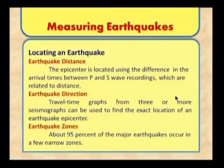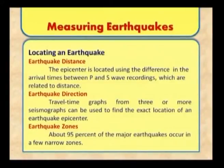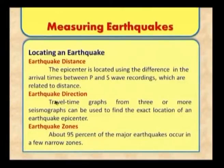We can also measure earthquakes using waves. We determine which wave arrives first and which arrives second to easily measure the earthquake. Based on the earthquake waves, we can find the earthquake distance — where the earthquake occurred. The place where the earthquake occurs is called the focus, and above the focus is called the epicenter. The epicenter is located using the differences in arrival time between P waves and S waves, using travel time graphs from three or more seismographs located in different locations across the entire world.